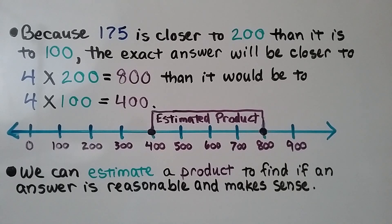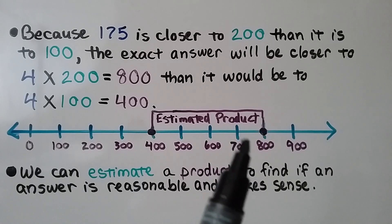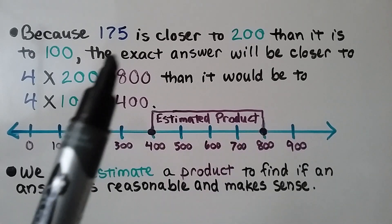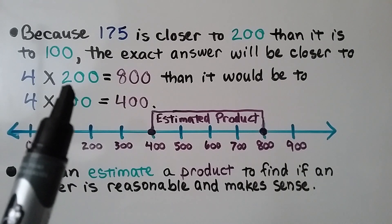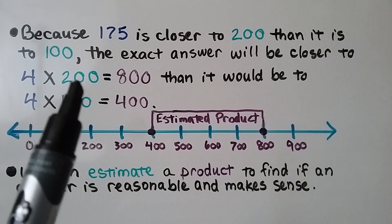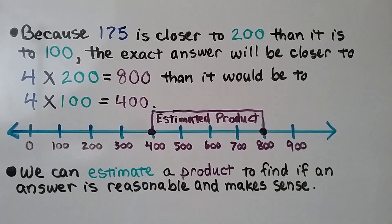Because 175 is closer to 200 than it is to 100, the exact answer will be closer to 4 times 200 equals 800 than to 4 times 100 equals 400. It's going to be between 400 and 800, but closer to 800, because 175 is closer to 200.